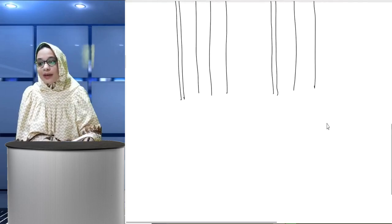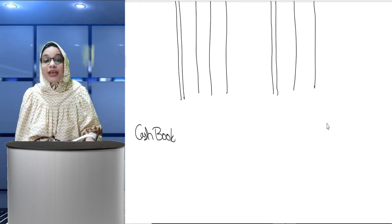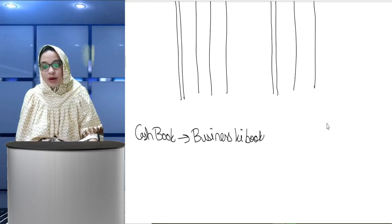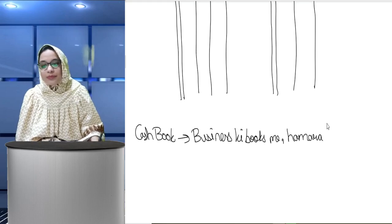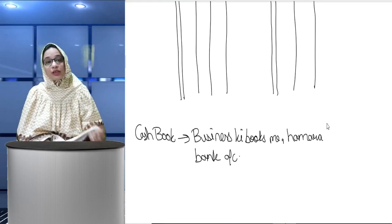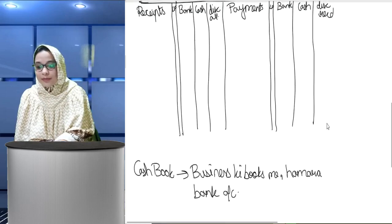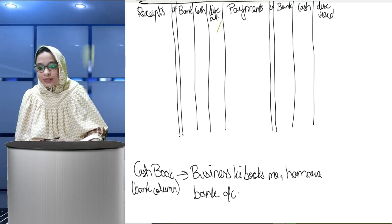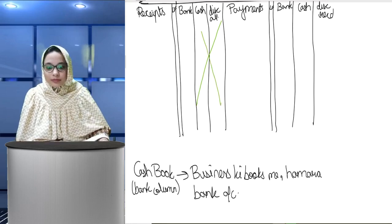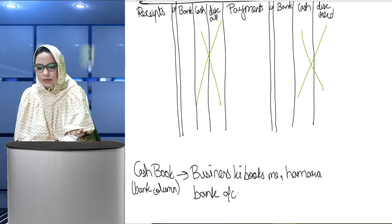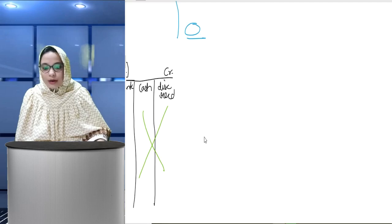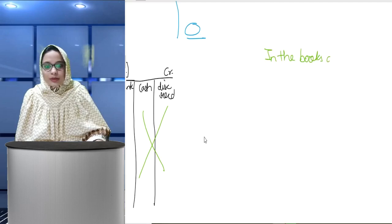Similarly, if you go to the bank, the bank also maintains your account. So this was SBI's account in our books, and now in the books of SBI, they have also maintained 'Zainab account' or 'Zainab Enterprise'. Your pass book or bank statement shows: particulars, deposit column whenever money is deposited in the account, withdrawals, and you get the balance.